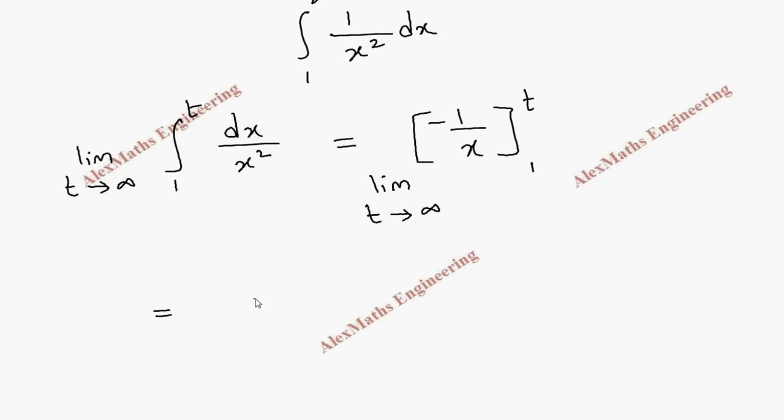Now when we substitute the limit, it becomes minus 1 by t, and when I put the lower limit, minus of minus 1 by 1.